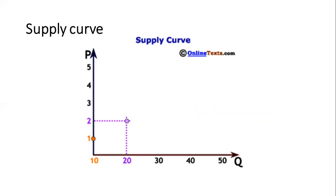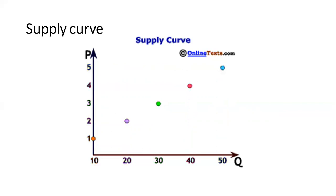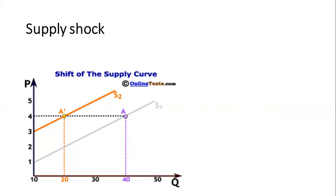Now let's look at supply. Supply represents production — people who are willing and able to produce. We usually don't start from zero because we have fixed costs, so we start at an intercept, as you see here at one. As the cost increases, we produce more units, and costs increase further — this is reflected in the supply curve, which is upward sloping because supply represents the cost function. Supply shocks, such as COVID-19 or the Russia-Ukraine war, cause a decrease in supply, which usually leads to an increase in prices.